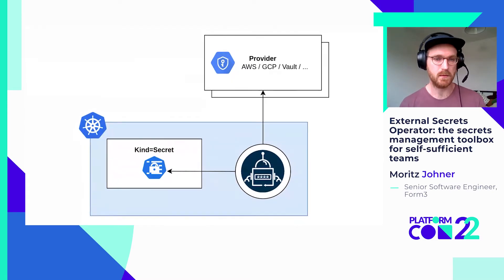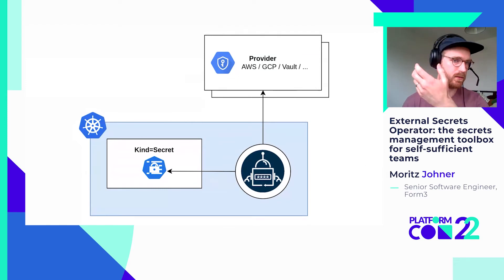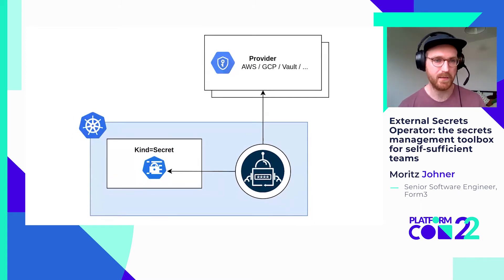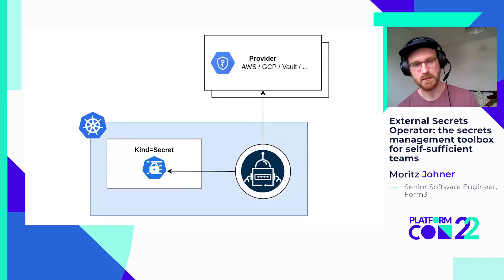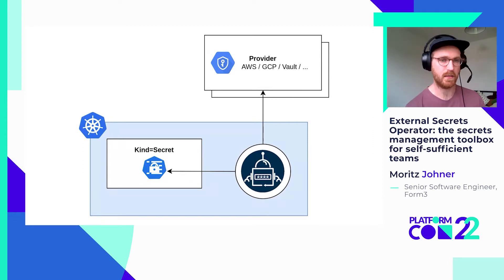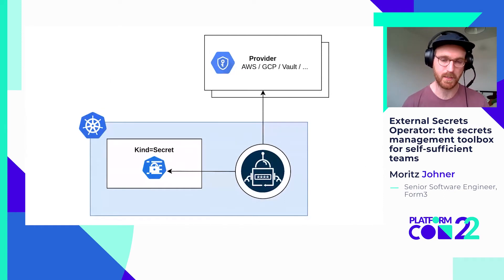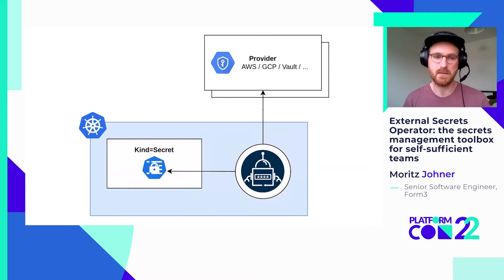ESO pulls in the secret from the provider — AWS, Secrets Manager, HashiCorp Vault, you name it — and writes it as a secret resource in Kubernetes. Internally, ESO does polling: it regularly checks if the secret has been updated or changed, then pulls in the new secret and writes it to the Kubernetes secret resource. So that change propagates as well, which is useful for secret rotation.